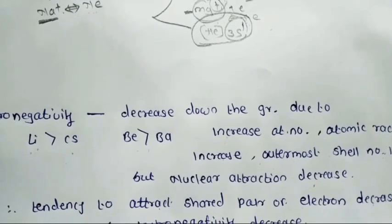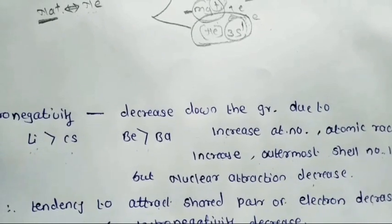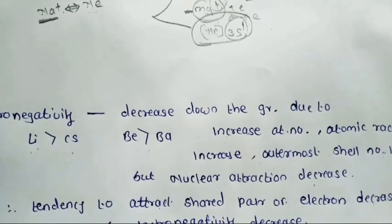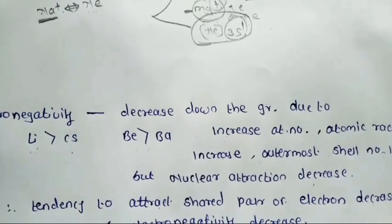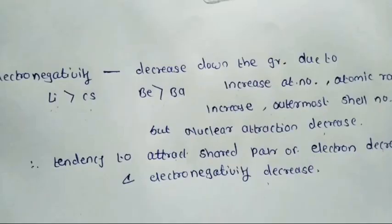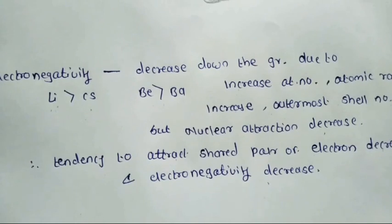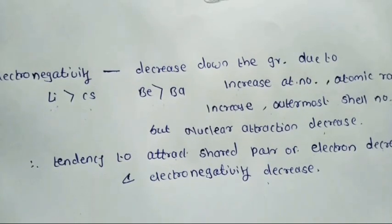In today's lecture, we learned about alkali metals and alkaline earth metals — their electronic configuration, physical properties, and different trends in group 1 and group 2. As an assignment, write about the different properties and similar properties of alkali metals and alkaline earth metals.